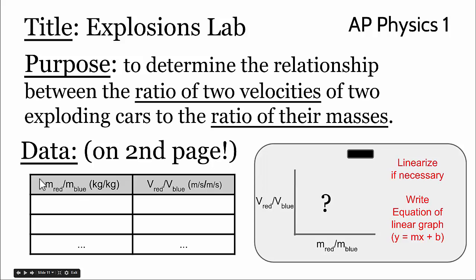The independent variable, we changed the ratio of the masses by either adding more or less mass to one of the cars, and then we found out what the resulting ratio of the velocities were.